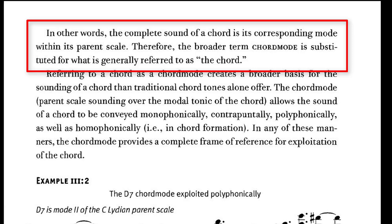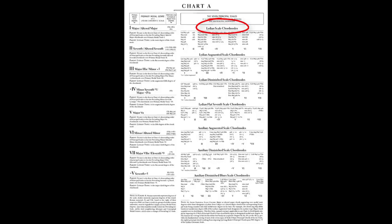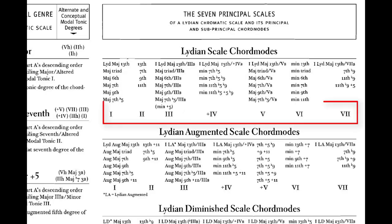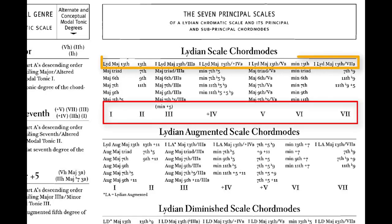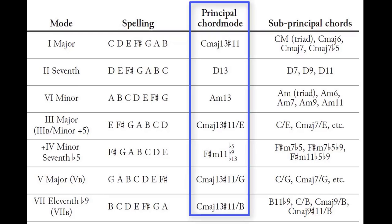The broader term 'chord mode' is substituted for what is generally referred to as the chord. Determining the scale that belongs to a particular chord is a multi-step process. First, identify the parent Lydian scale, then determine the harmonic genre based on the characteristic modes of the Lydian scale. Russell goes through all seven modes of the Lydian scale, identifying the principal chords of each mode. These chords represent the purest form of the mode and the basis for the chord-scale matching process. The order of modes in this table roughly coincides with the frequency of each principal chord mode in jazz practice.